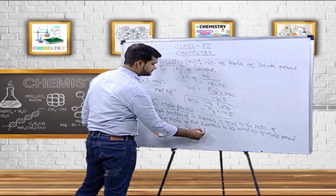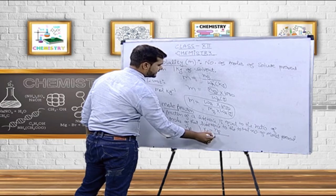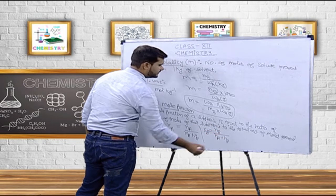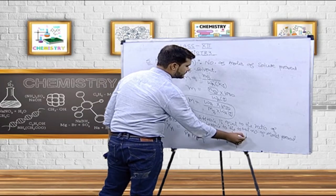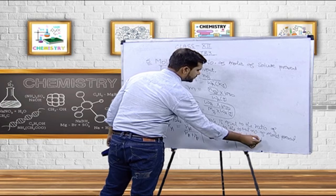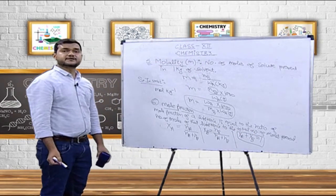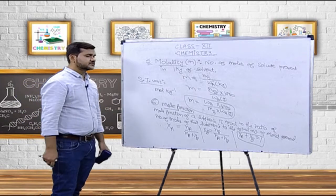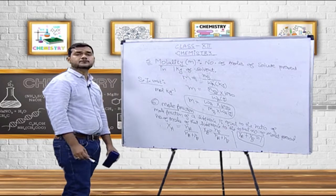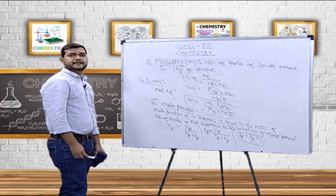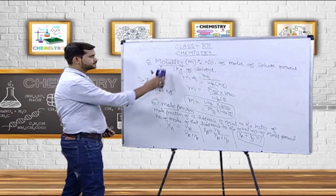If I have to calculate x_B, then the formula will be: n_B upon (n_A + n_B). There is one more important thing — mole fraction of A plus mole fraction of B is always equal to 1. If there are 2 components in the solution, then the mole fraction of one component plus the mole fraction of the other component equals 1. In fractions, 1 is 100 percent.